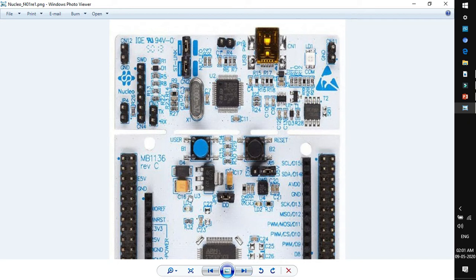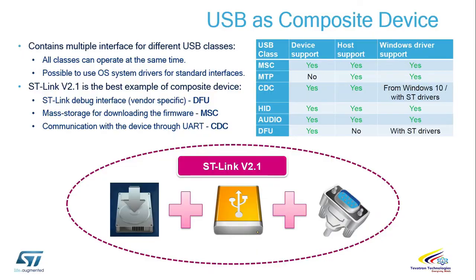Now let's discuss what is the composite configuration of USB. Composite configuration means a single USB can act as multiple interfaces for different classes. For example, if you have this Nucleo board and you connect it to the system, you will notice that the ST-Link debug interface will be enumerated as a USB drive on your system.